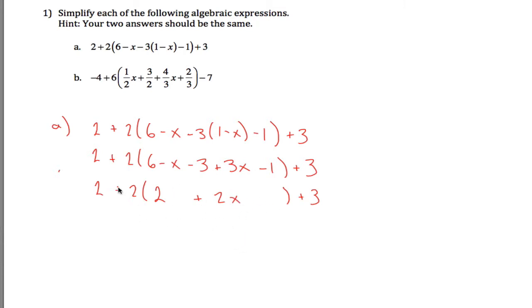And now that I've combined like terms, it's a little bit less work to distribute this 2 in. So to get rid of these parentheses, I take this positive 2 and distribute it to each of the 2 terms inside the parentheses. 2 times 2 is 4, 2 times 2x is 4x, and then don't forget you still got this 3 hanging out out here.